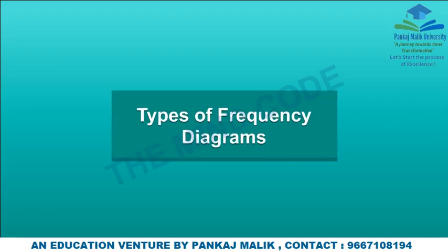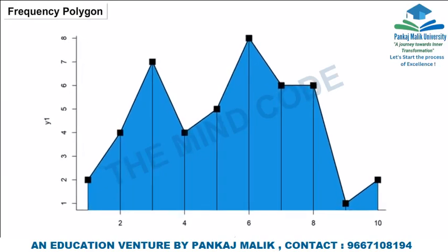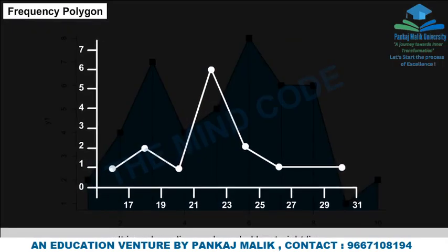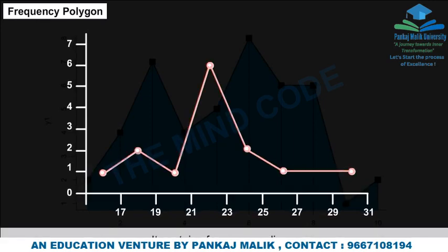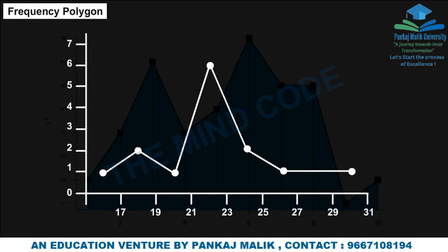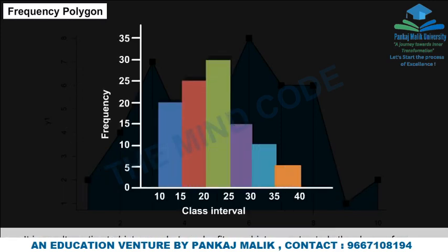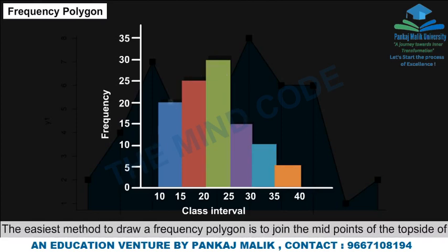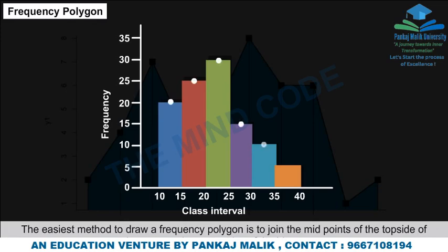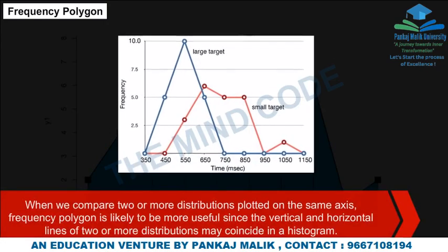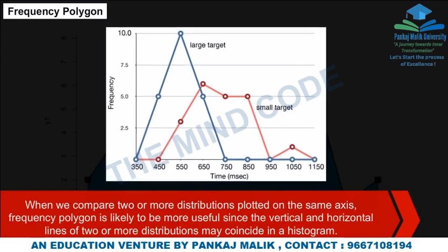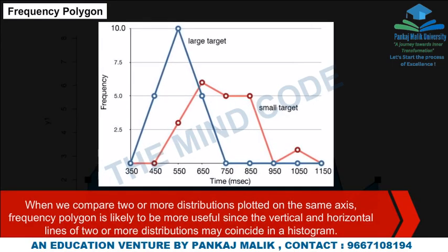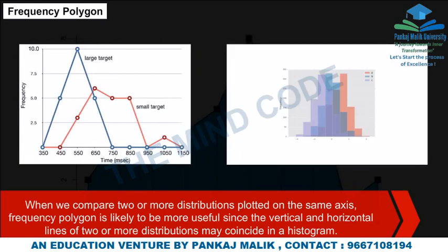Frequency Polygon: A frequency polygon is a plane diagram bounded by straight lines, containing four or more lines. It is an alternative to the histogram but can be fitted on a histogram to study the shape of the curve. The easiest method to draw a frequency polygon is to join the midpoints of the top sides of consecutive rectangles of the histogram. It is more useful when comparing two or more distributions plotted on the same axis.